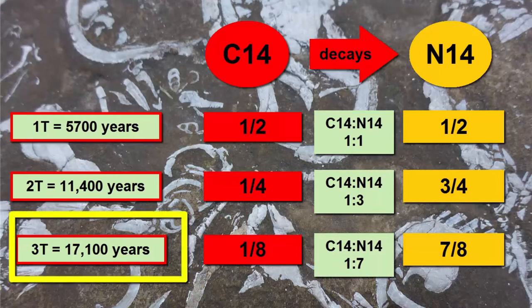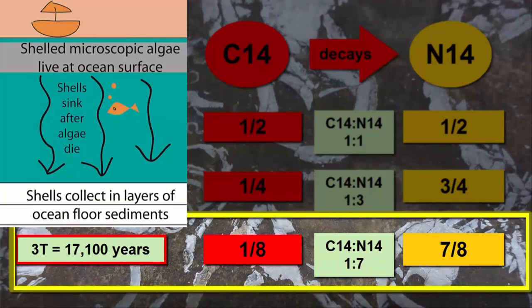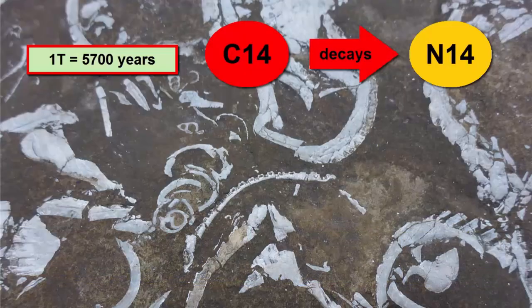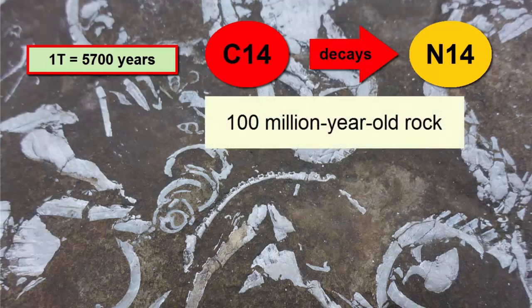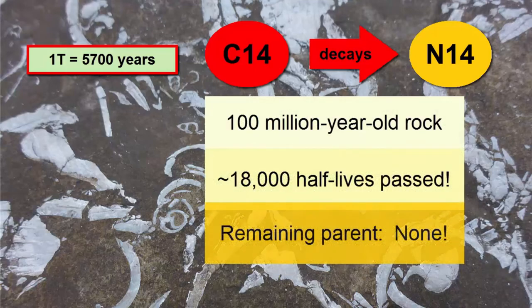At this point, three half-lives have passed, and the time is 5,700 times 3, or 17,100 years. A shell that was buried 17,100 years ago would have a carbon-14 to nitrogen-14 ratio of 1 to 7. If we are trying to use the carbon-14 to nitrogen-14 radioactive decay pair to date a rock that's 100 million years old, there likely will not be enough parent left to measure, and that would not be a good choice.